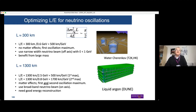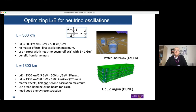You want to place yourself at the maximum of the oscillations, which is driven by this frequency. Depending on the baseline — about 295 km for Japan and about 1300 km for the US — you get different typical energies. You want a narrow-band beam for one baseline and a broadband beam covering the first and second maximum for the other. Matter effects differ significantly between the two cases.